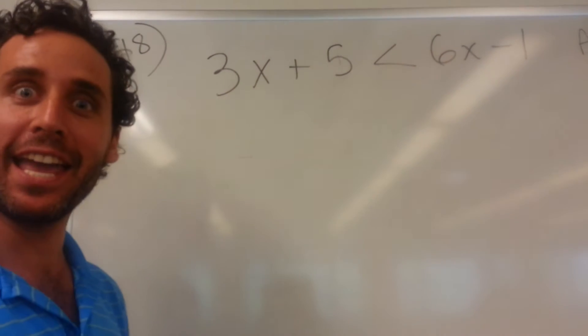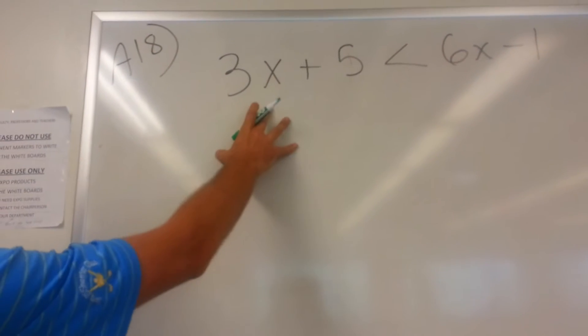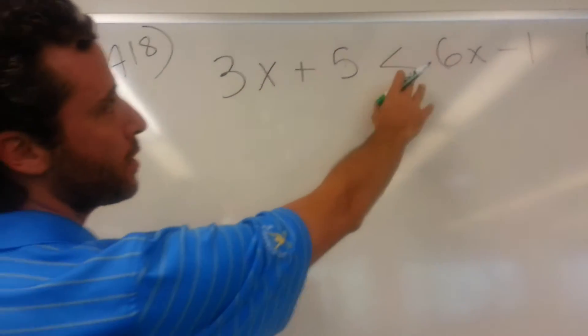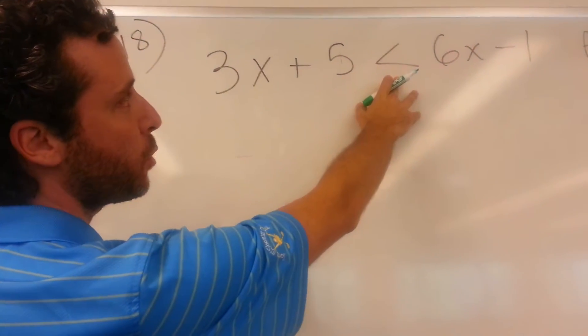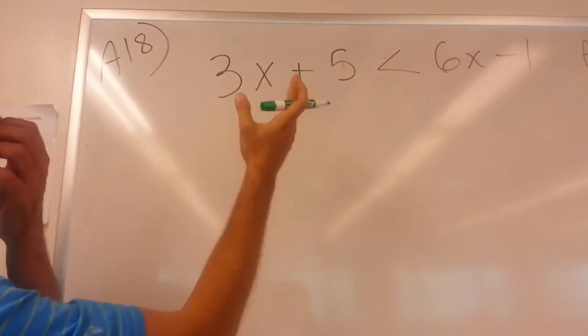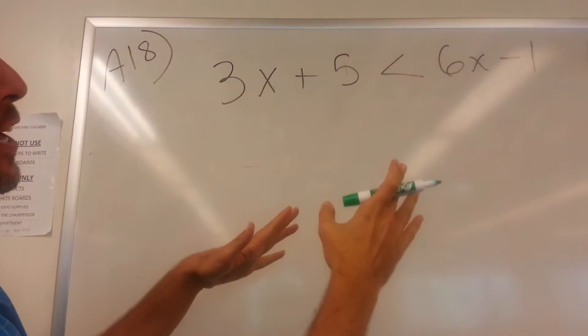Okay, we're doing problem A18, and we want to solve for x. It's basically something that you've been familiar with, except it has an inequality here. What we're going to do is we're going to get the x's on one side and the numbers on the other.